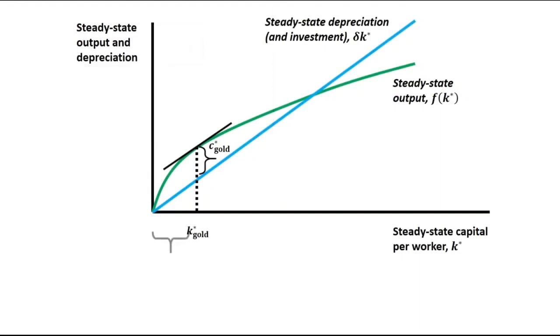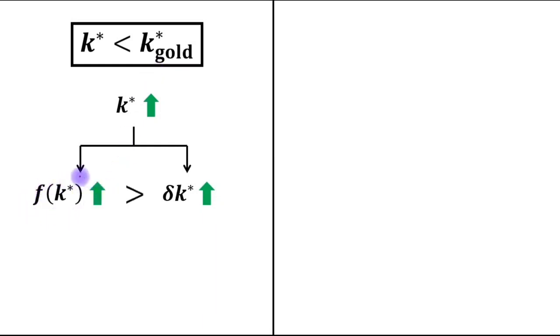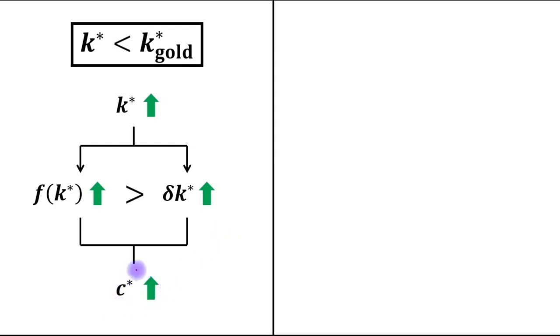In the first case, where steady-state capital is less than the Golden Rule level (k* < k* gold), if k* increases it has two impacts: steady-state output increases by a larger amount than the increase in depreciation. The final result is an increase in steady-state consumption c*. In this region, the production function is steeper than the depreciation line, so the gap between the two curves widens as capital increases.